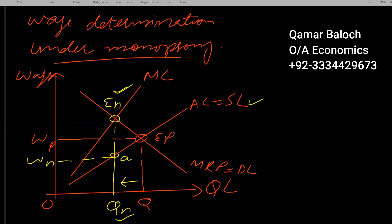So monopsony employer offers low wage as compared to the prevailing market wage and it employs less a number of workers.